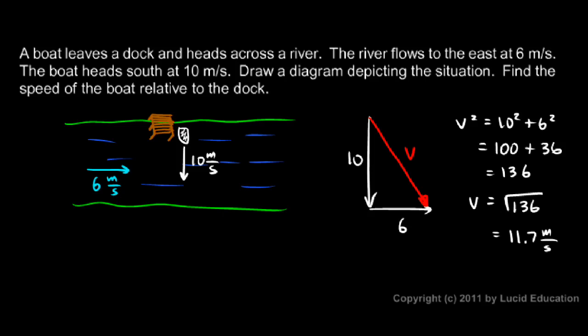That's how fast the boat is moving relative to the dock. And you can see on the diagram here, the direction. It's moving southeast, so to speak. And a little bit more south than east because the southerly speed was greater than the easterly speed. But this is the answer to the question.